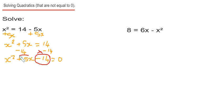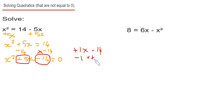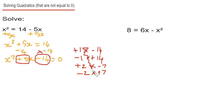Let's write our numbers down that multiply to give us minus 14: 1 times negative 14, minus 1 times plus 14, plus 2 times minus 7, and minus 2 times plus 7. Which one of these pairs adds to give us plus 5? It will be the bottom pair: minus 2 and plus 7.